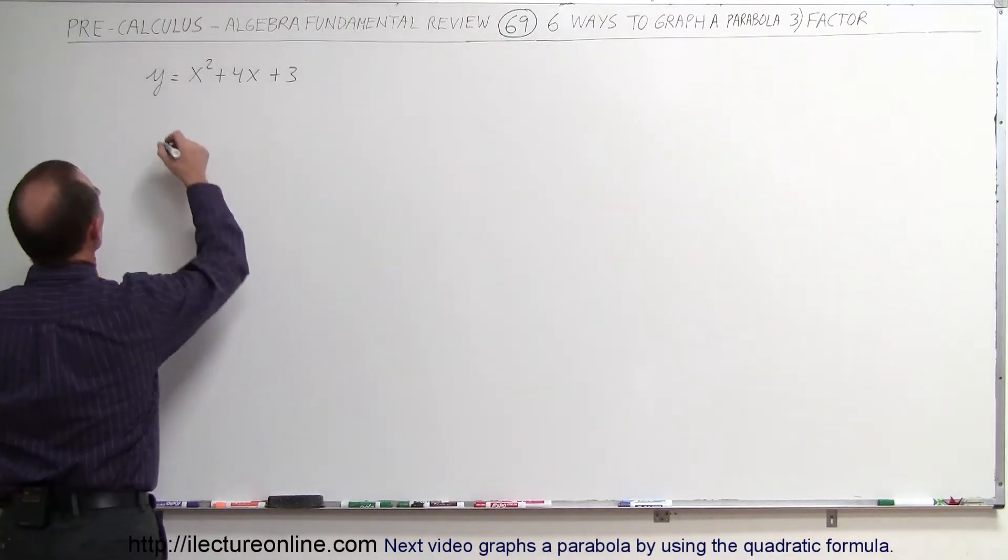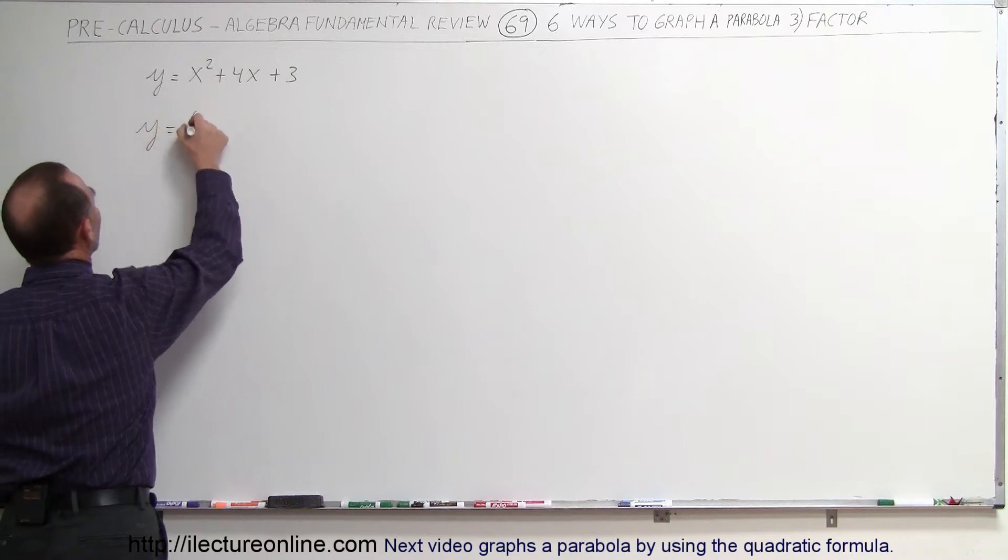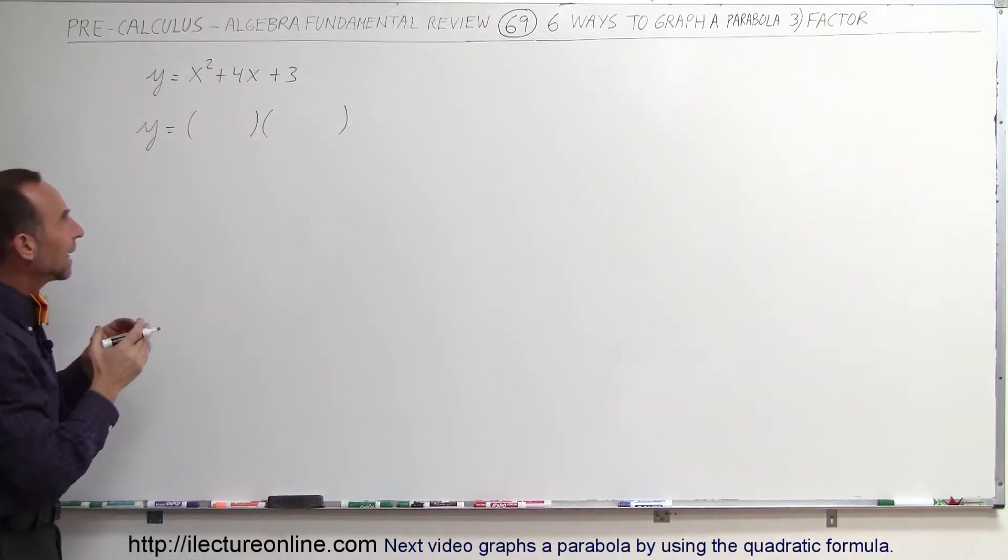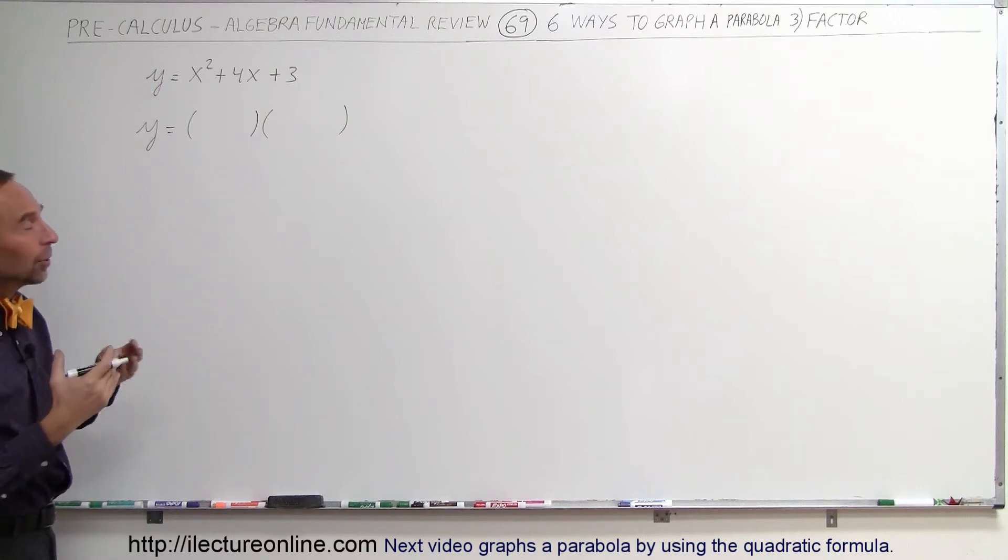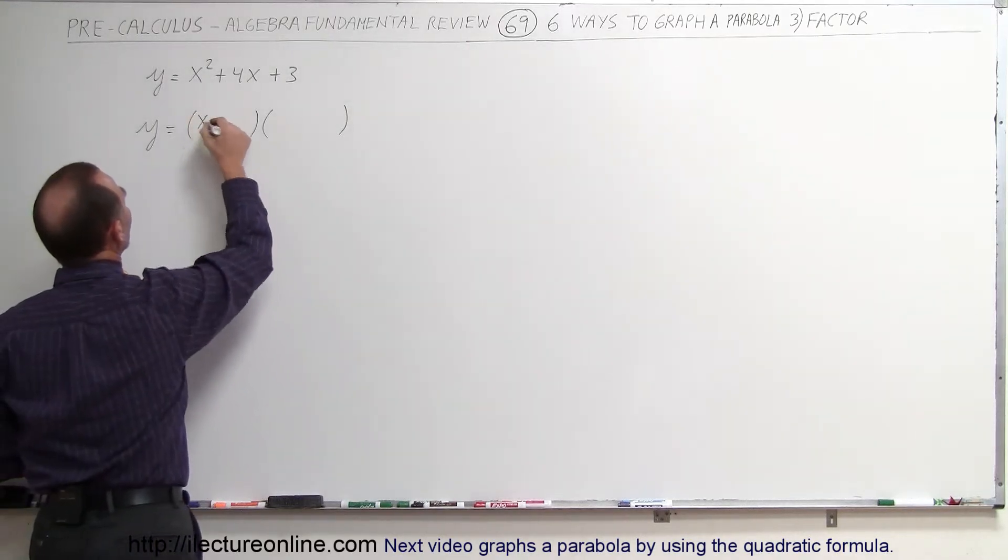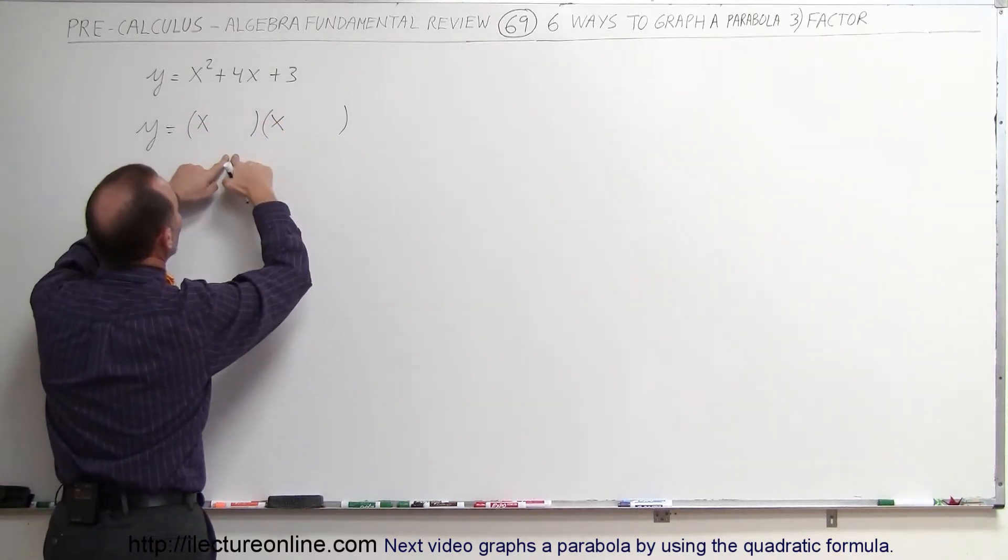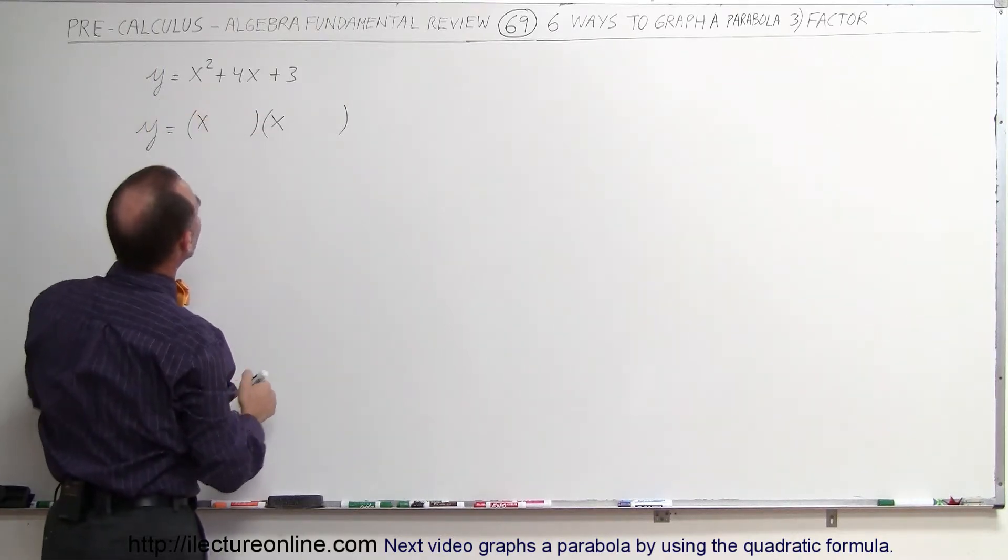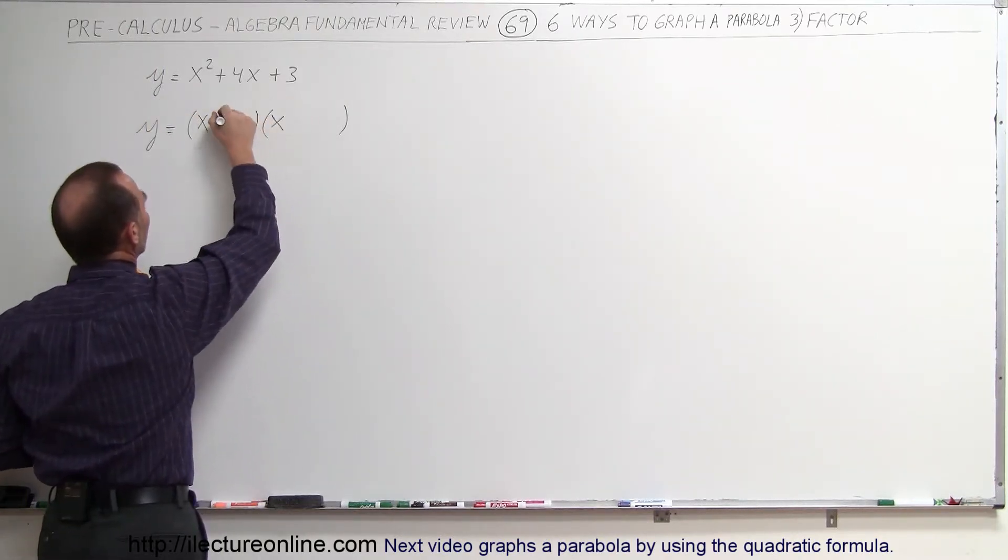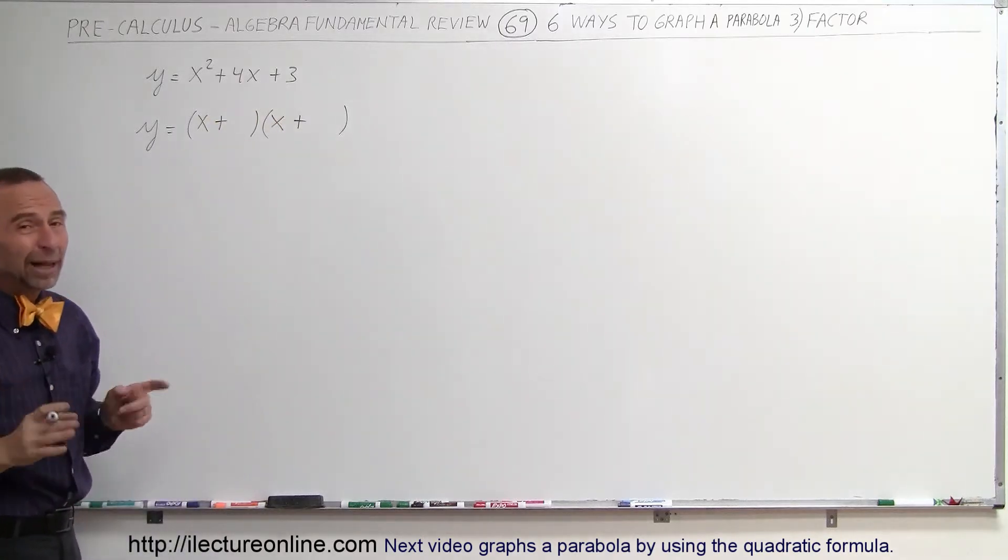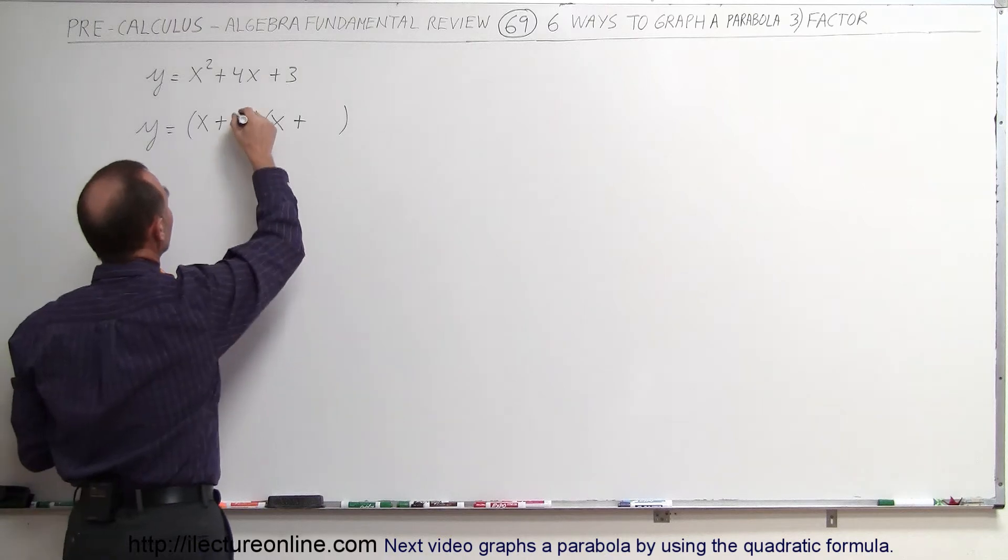When we do, we get the following. So we're going to write y is equal to a product of two binomials. So we're taking a trinomial, a parabola, an equation representing a parabola, and writing it as a product of two binomials. So we know we're going to need an x and an x because when we multiply the two binomials together, we should get back what we started with. So x times x is x squared, and we know we need all pluses because everything here is positive. And now we're looking for two numbers. When you multiply, you get three. That can only be a one and a three.